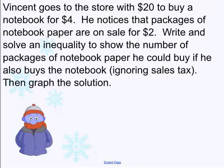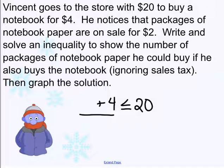Let's come up with an equation for this one. Vincent goes to the store with 20 bucks. He needs to buy a notebook for 4 bucks. He notices, though, that packages of notebook paper are on sale for $2. Different type of paper. Write and solve an inequality to show the number of packages of paper he could buy if he also buys his regular notebook. So what we're saying is, if I want his total, since he only has 20 bucks, I want his total to be less than or, he could spend all of it, so less than or equal to $20.